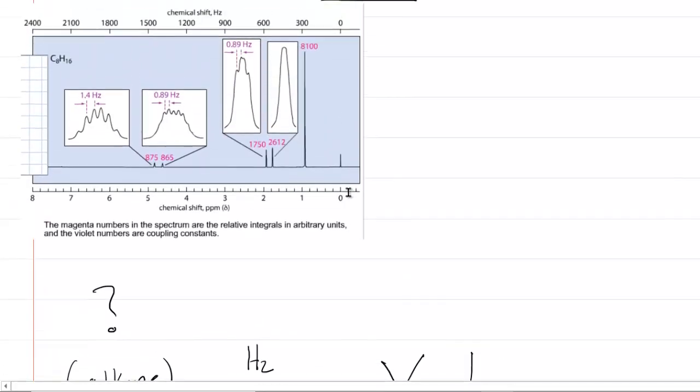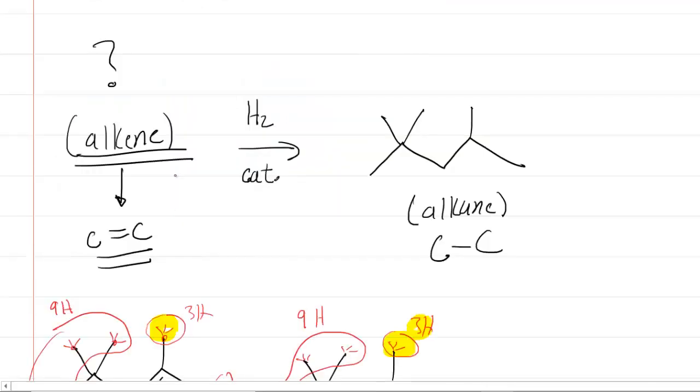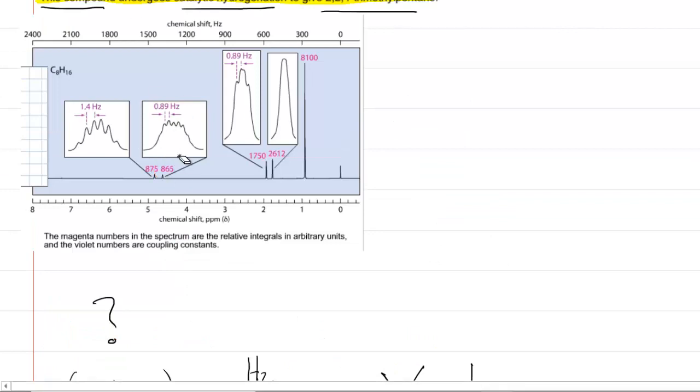We go back up to the NMR and we look at the numbers that are in the magenta color. Now, these are kind of unhelpful numbers. What you want to do is pick the smallest of the magenta numbers, which is 865, and then just divide each number by the smallest one. So, for example, if you take 865 and divide it by 865, you would just get one. If you take 875 and divide it by 865, then you would get approximately one. If you do 1750 divided by 865, you would get approximately two. 2612 divided by 865 is approximately three. And then 8100 divided by 865 is approximately nine.